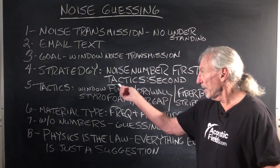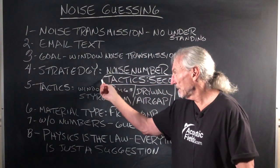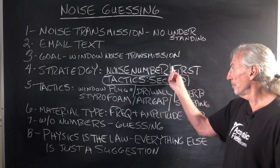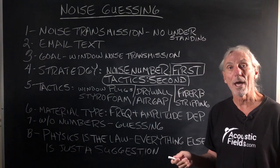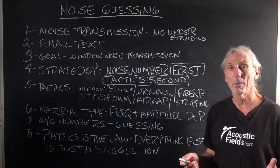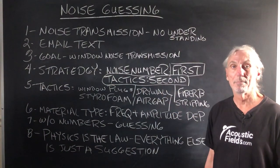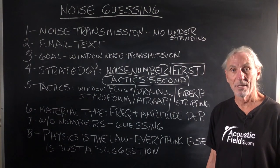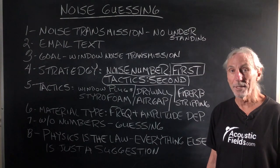You never want to start with tactics first. That's what you do second after you get your noise numbers first. Without noise numbers, you don't have a roadmap. You don't have GPS. You don't have direction. You're just putting band-aids on things without knowing how bad they're bleeding. And you won't stop the bleeding.